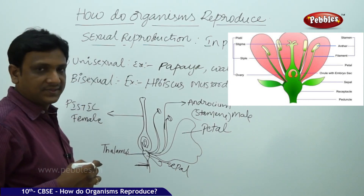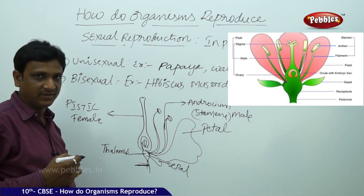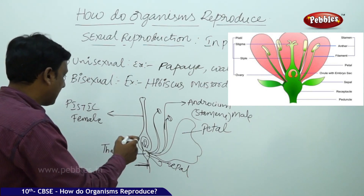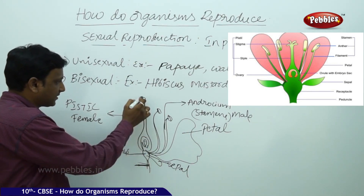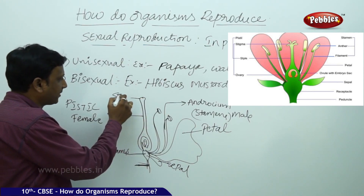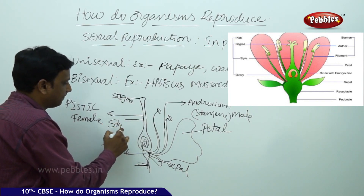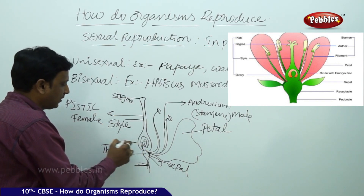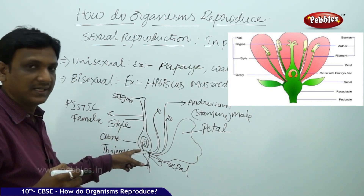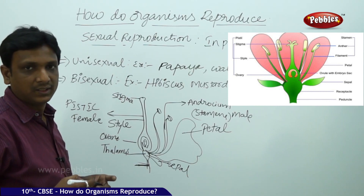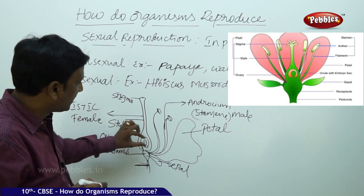In sexual reproduction, the male gamete fuses with the female gamete. The female gamete is located here inside the pistil. The pistil has different parts: the top part is called the stigma, this tube-like structure is called the style, and this is called the ovary. Inside the ovary, the female gametes are present — inside the ovary, ovules are there, one or many ovules. The ovules consist of female cells located here.